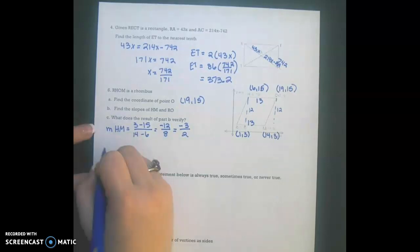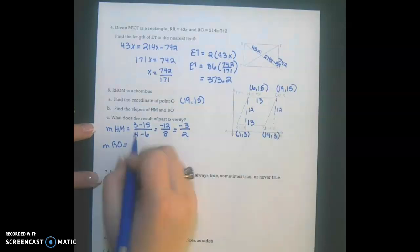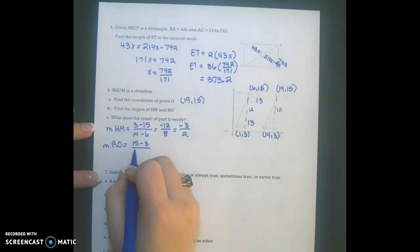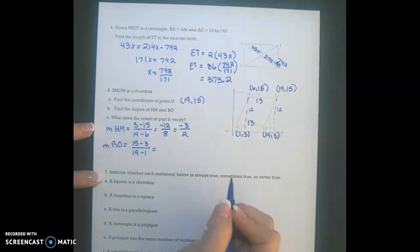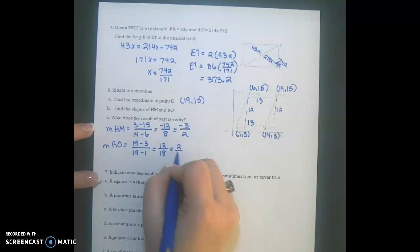Now to find the slope of RO. That would be 15 minus 3 over 19 minus 1. And that would be 12 over 18, which reduces to positive 2 over 3.